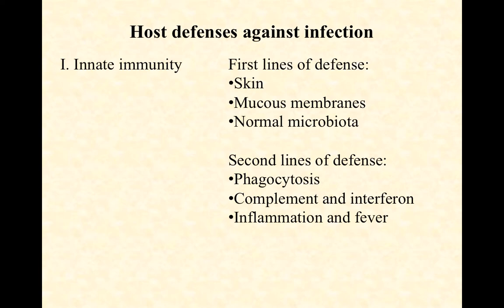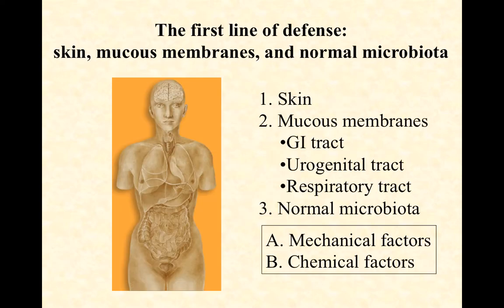In this first video, we're going to focus our attention on the skin as an innate first line of defense. In this image, you're seeing more specifically what we were just talking about — the first line of defense with skin, mucous membranes, and normal flora. Mucous membranes specifically line the gastrointestinal tract, the urogenital tract, and the respiratory tract. Pay specific attention to the distinctions between mechanical factors and chemical factors that are protecting us. So let's look at the skin.